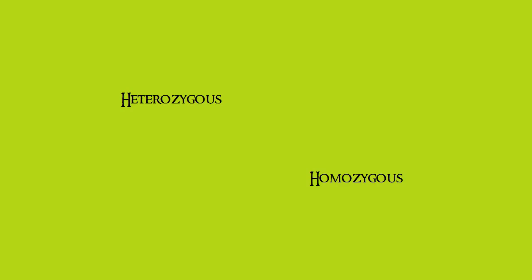Lastly, heterozygous and homozygous. Heterozygous refers to a genotype which contains two different alleles. For example, being heterozygous for brown hair would be big B, little b — because big B is expressed and there are two different alleles. Hetero meaning different. And so logically, homozygous means having the same alleles. For example, big B big B gives brown hair, AA gives A blood group, BB gives B blood group, and so on.